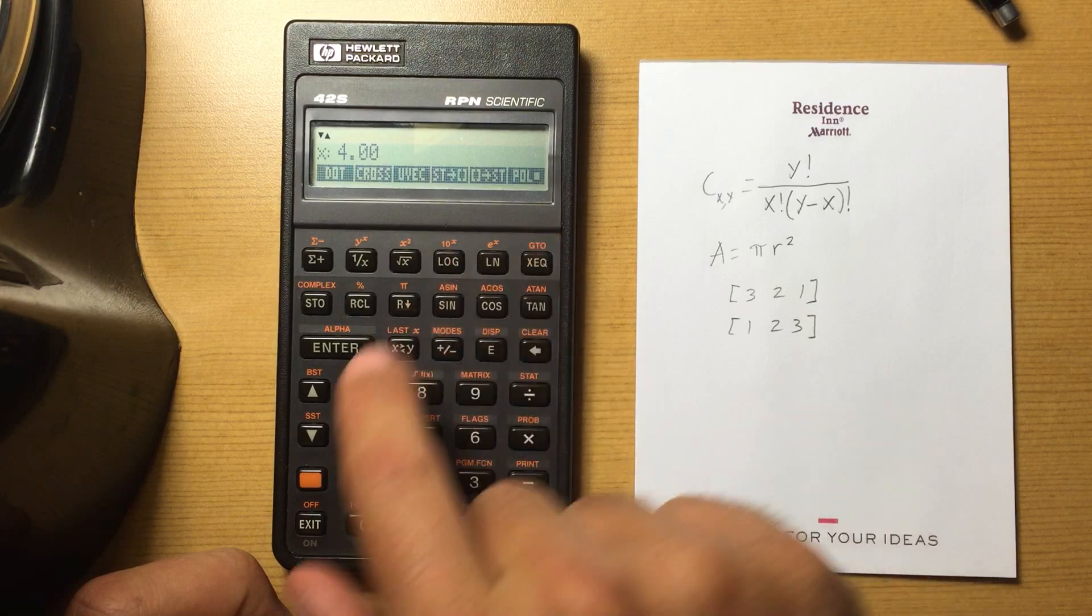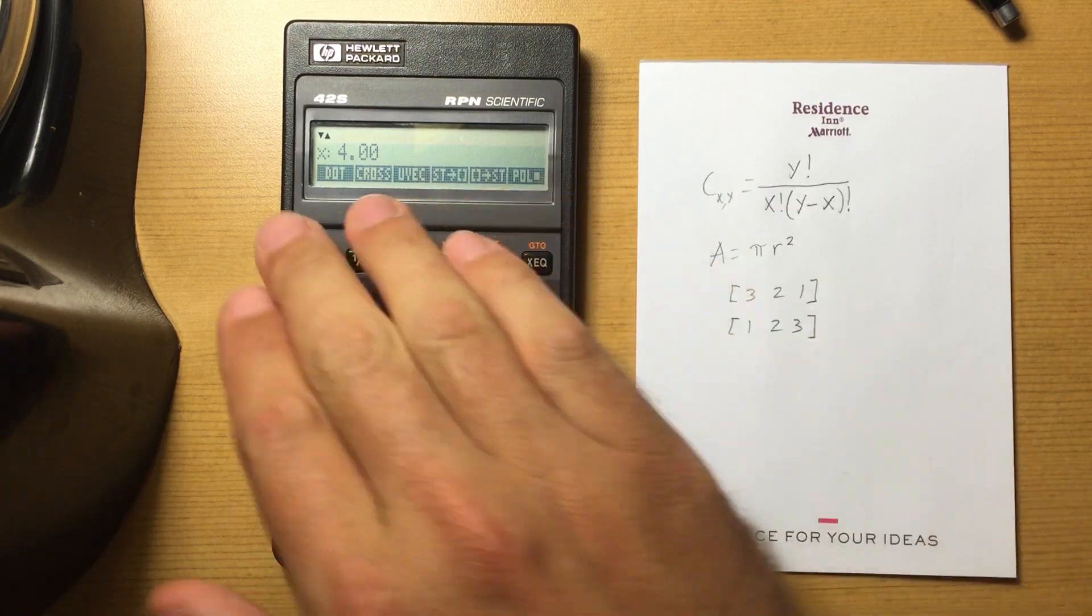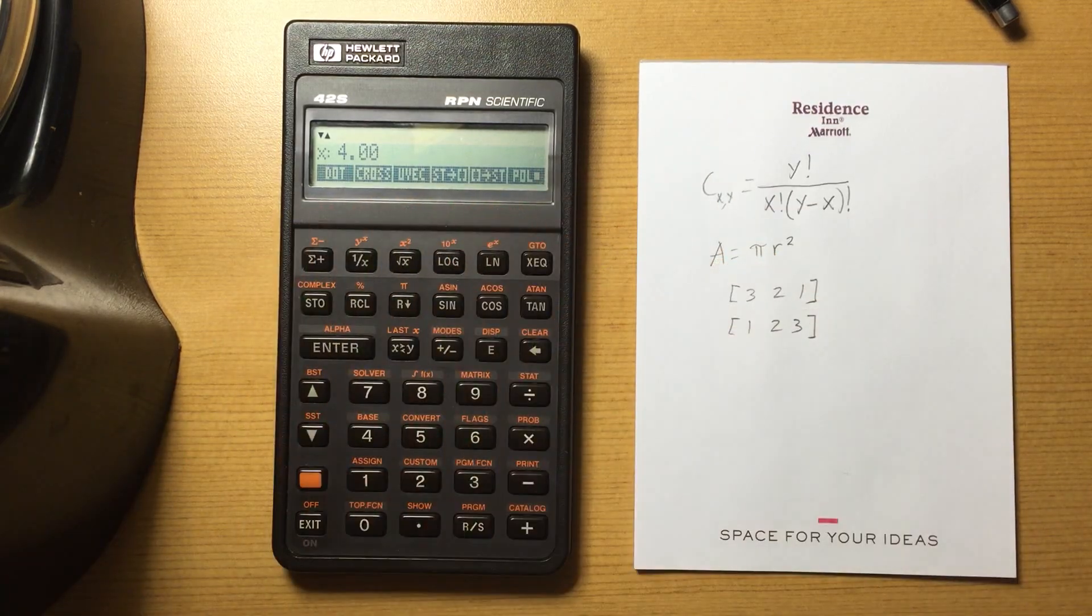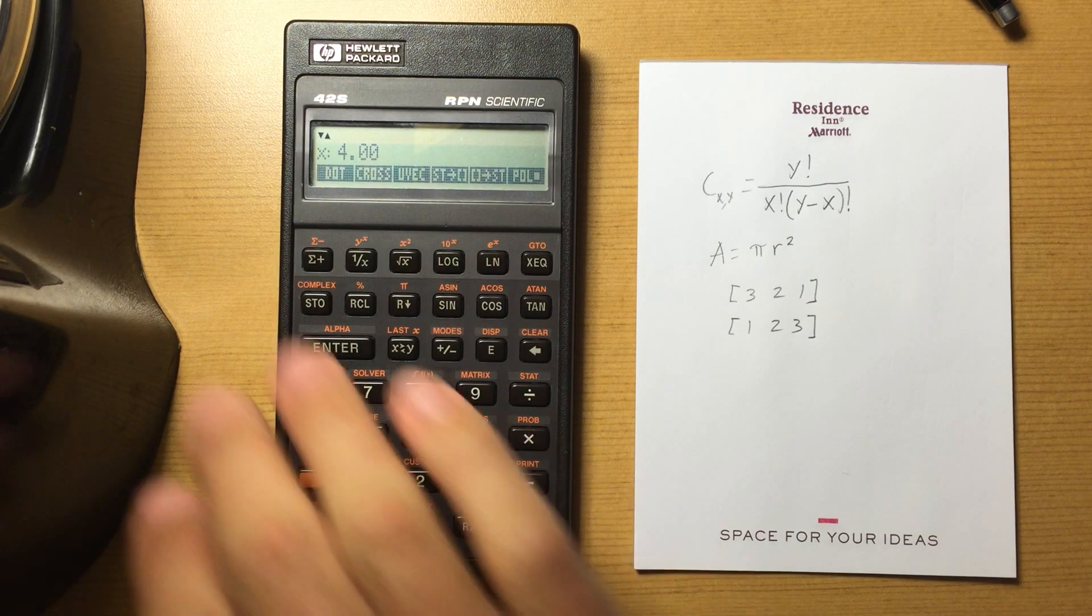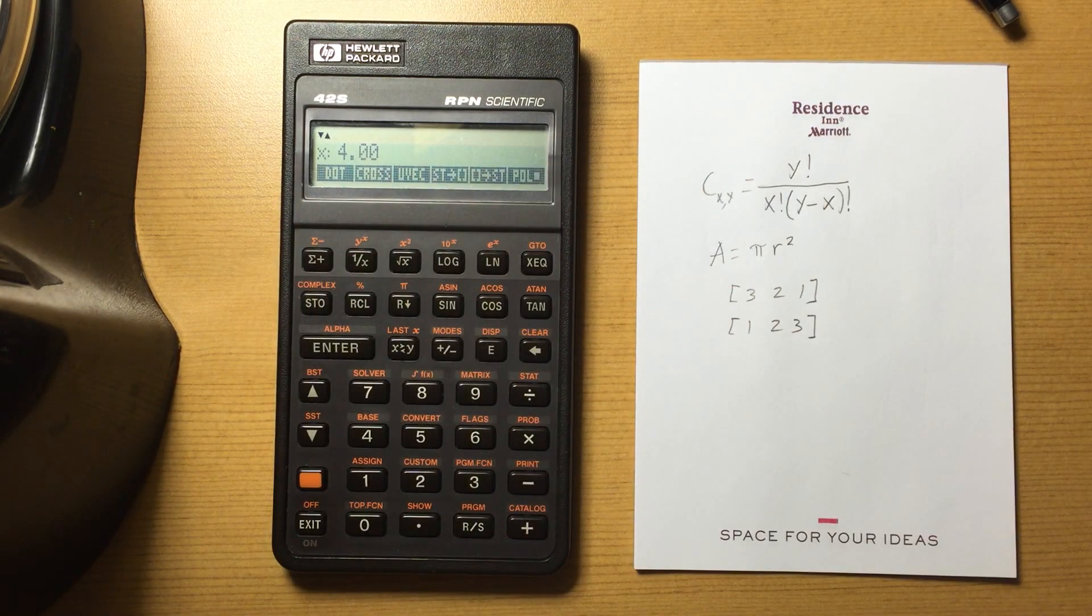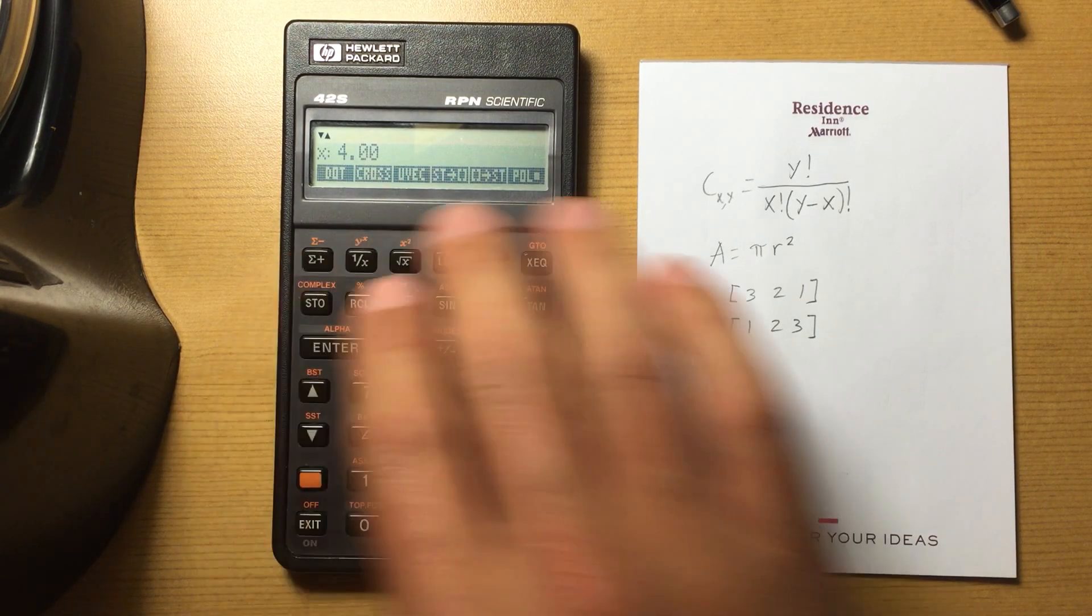I can switch between polar and rectangular. Anyway, this is a program that I entered in based on the manual. And it populates this custom menu for me. I can take the dot product of my vectors. I can find the unit vector.